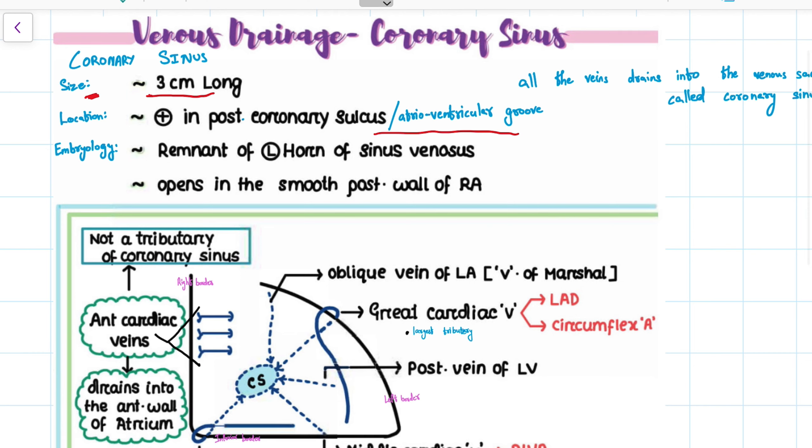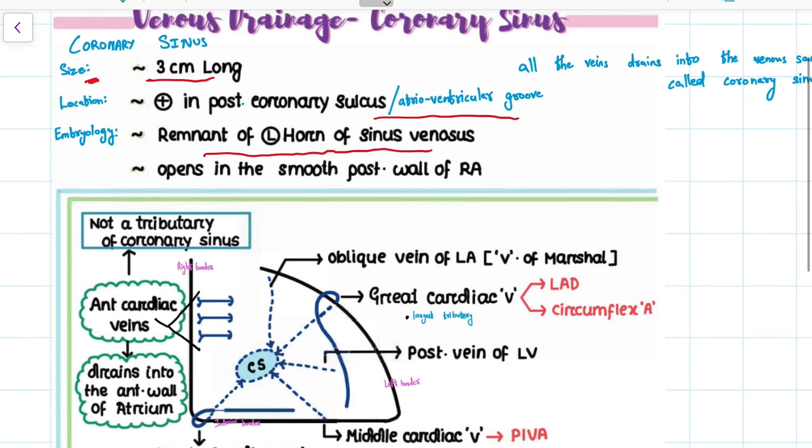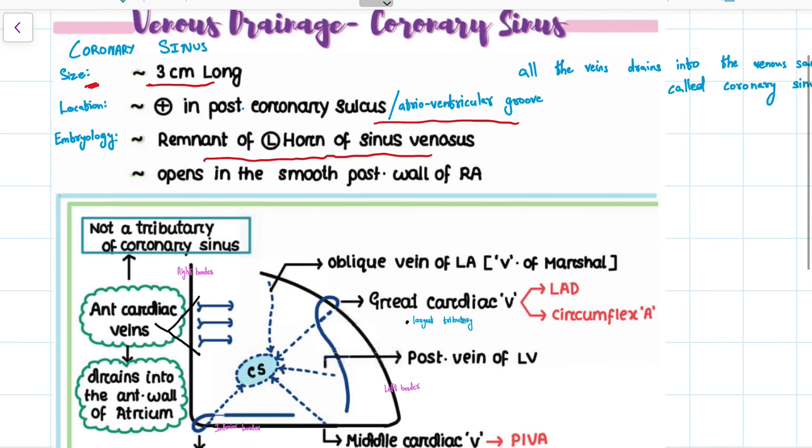And embryologically, the coronary sinus actually comes from, is actually a remnant of the left horn of the sinus venosus. And this coronary sinus opens into the smooth posterior wall of the right atrium.